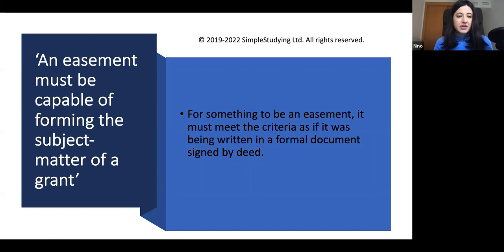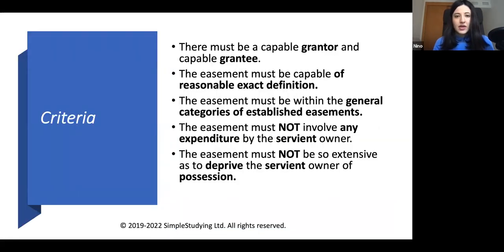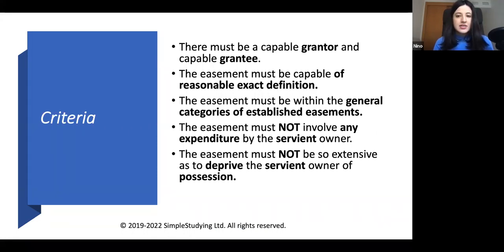The easement must be capable of forming the subject matter of a grant. For something to be an easement, it must meet the criteria as if it was being written in a formal document signed by a deed. The criteria for being a subject matter of the grant are: there must be a capable grantor and capable grantee; the easement must be capable of reasonably exact definition; the easement must be within the general categories of established easements; the easement must not involve any expenditure by the servient owner; and the easement must not be so extensive as to deprive the servient owner of possession.